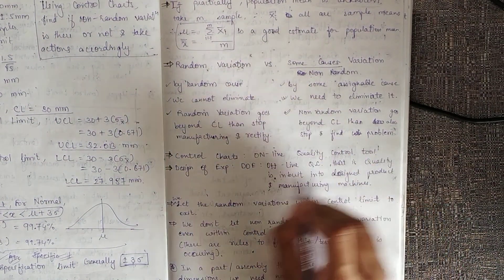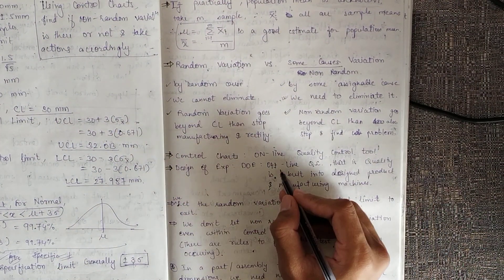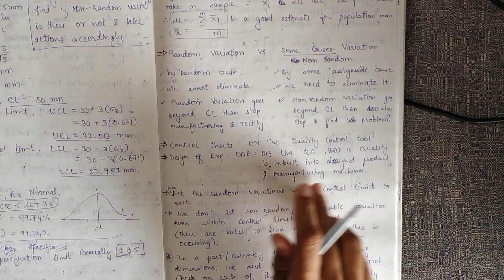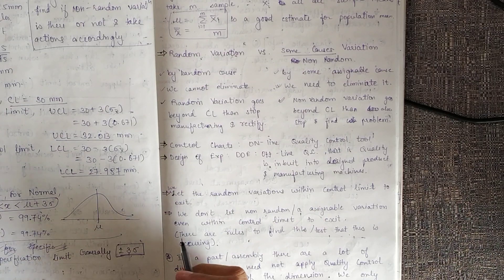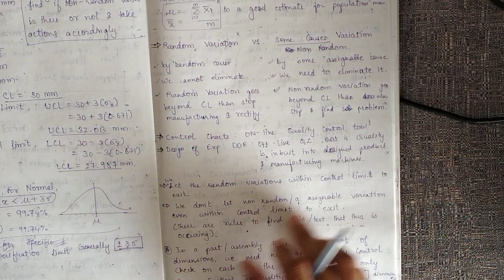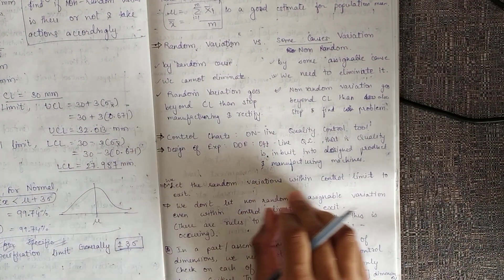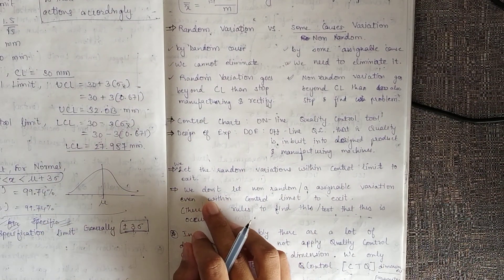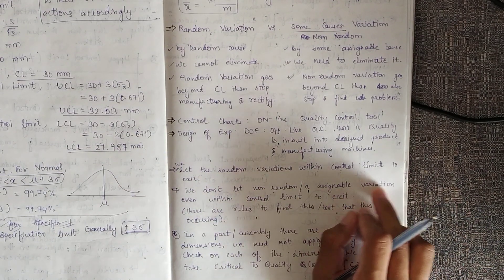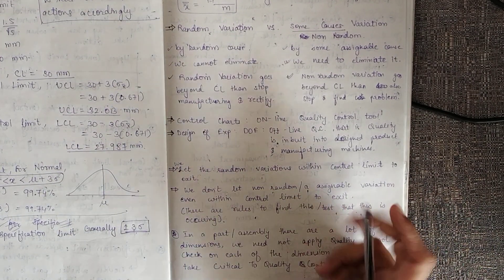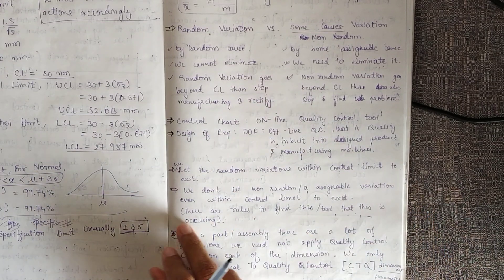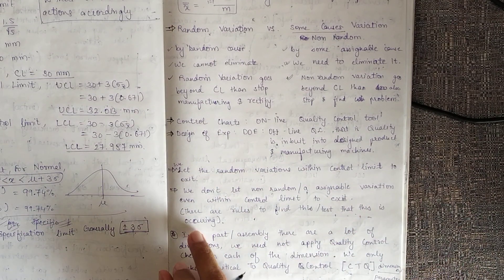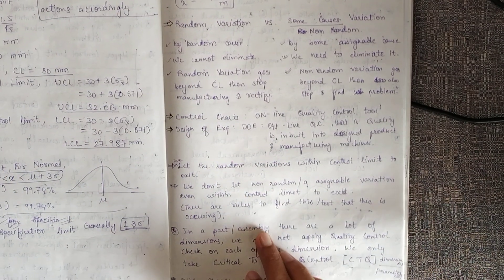Control charts are an online quality control tool. Design of experiments (DOE) is an offline quality control tool where quality is built into the designed products and manufacturing machines. We allow random variations within the control limits to exist because we cannot eliminate them, but we do not allow non-random or assignable variations — even within the control limits — to exist. There are rules and tests to detect assignable variations.